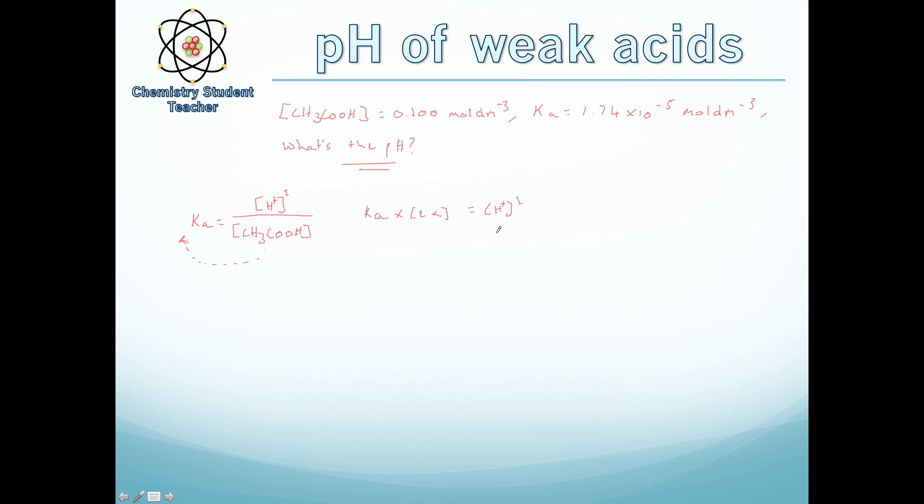Now to have more room for the next step I'm just going to reset this slide. So now we know that H plus squared is equivalent to Ka times ethanoic acid what we can do is square root it all so H plus now equals the square root of Ka times by the concentration of ethanoic acid. And what we can simply do is just put the values in from the question so H plus now equals the square root of 1.74 times 10 to the minus 5 times by the value of ethanoic acid which is 0.100. Square root of that and then we get a value of 1.32 times 10 to the minus 3 moles per dm cubed.